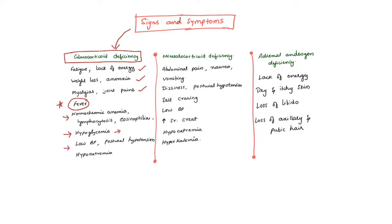In addition, because glucocorticoid deficiency also affects vascular tone, patients will have low blood pressure and postural hypotension. Hyponatremia seen in glucocorticoid deficiency is because there is slightly increased vasopressin levels, which in turn leads to mild SIADH, leading to mild hyponatremia.